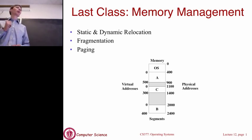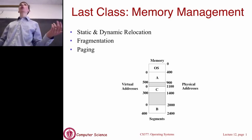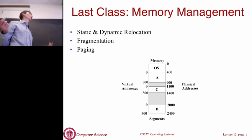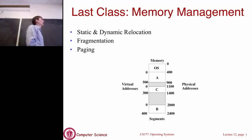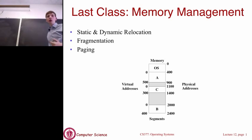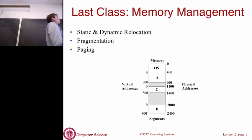Remember last class we started talking about memory management. We started with the simple case of one program running at a time — one process running at a time. That's uniprogramming. Then we moved to the idea of static and dynamic relocation, where we're doing contiguous allocation, placing processes in various fixed contiguous blocks of memory. The main problems are how to place things in memory and how to do the translation between virtual and physical addresses.